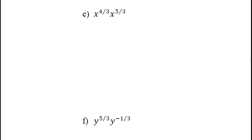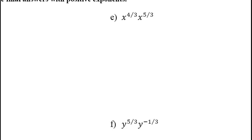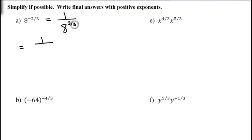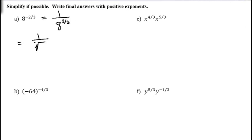Now we simplify and write answers with positive exponents. For 8 to the negative 2/3: handle the negative exponent first — that's 1 over 8 to the positive 2/3. The denominator root is cube root of 8 and the numerator gives the exponent 2. Take the root first: cube root of 8 is 2, then square it to get 4. The result is 1/4.